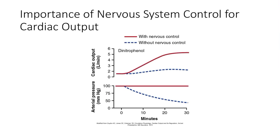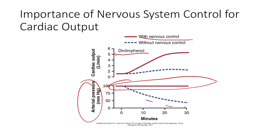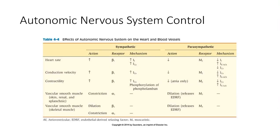This also shows the importance of the nervous system for controlling cardiac output. An experiment demonstrates that with nervous system control intact, arterial pressure stays stabilized even when a pharmacological agent like dinitrophenol is introduced to reduce arterial pressure. Without that nervous system control, we see huge reductions. This is clinically relevant in heart transplant patients, who lose that nervous system control and have impaired ability to regulate heart rate and blood pressure, especially during exercise.